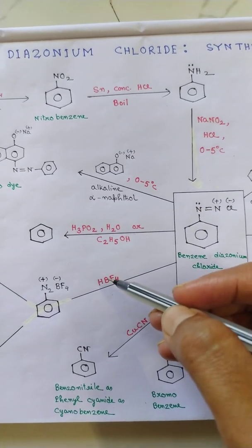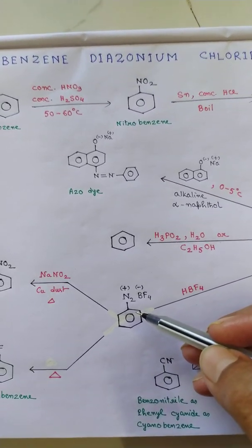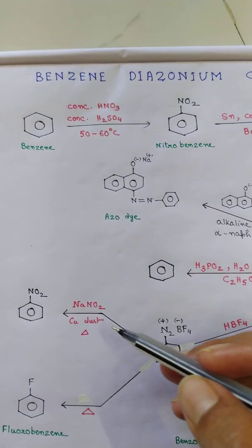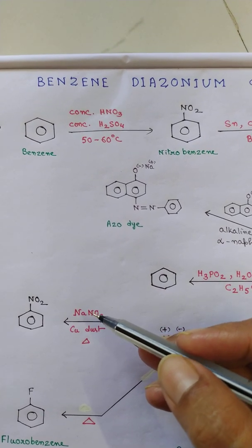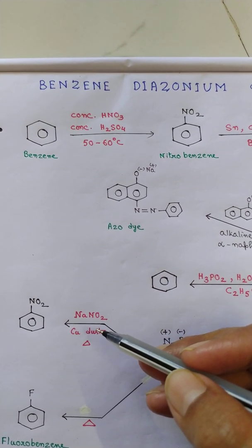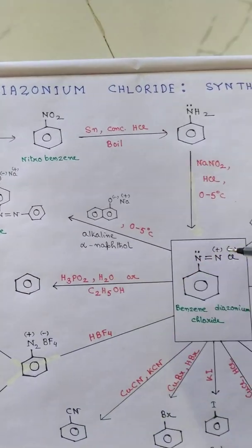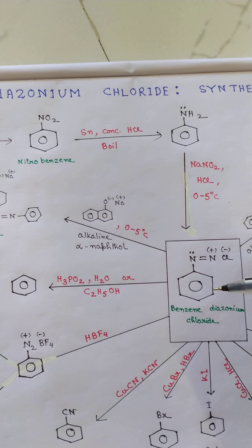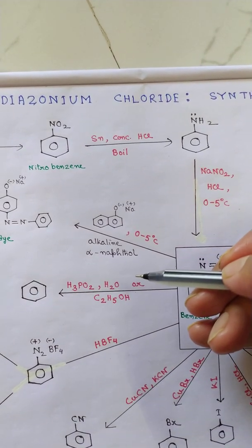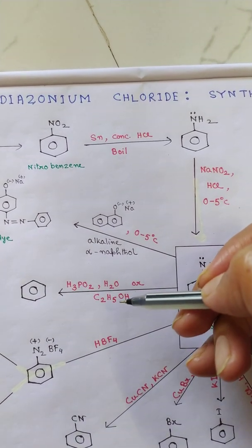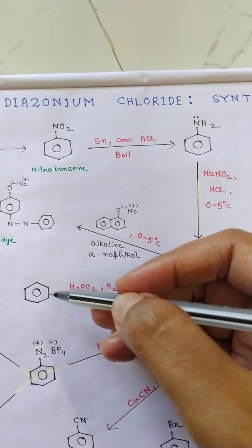Now after giving HBF4, we have benzene diazonium fluoroborate. If we heat this with copper dust and sodium nitrite, then we have nitrobenzene. And if we treat this benzene diazonium fluoroborate with H3PO2, H2O, or ethanol, then we will have benzene.